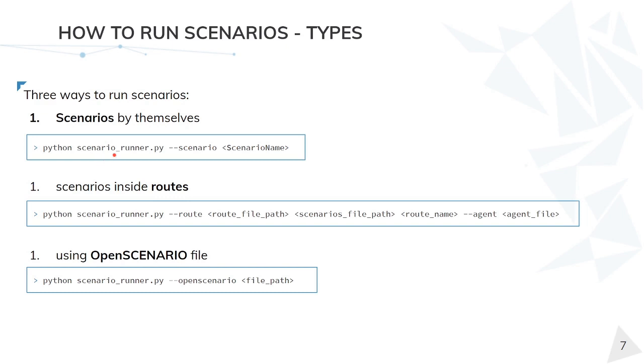Then Scenario Runner has three ways of running scenarios. First, they can be run by themselves, in other words, completely isolated. They can also be run inside routes, or we can run scenarios using an Open Scenario file. All of these cases go to the ScenarioRunner.py file, which is the main script of the repository.